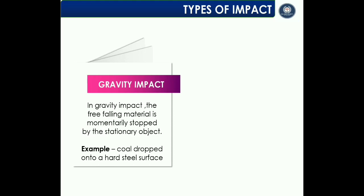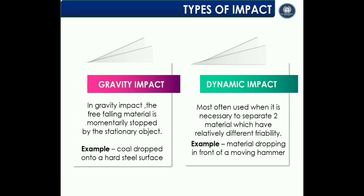There are two different types of impact. The first is gravity impact, in which free-falling material is momentarily stopped by a stationary object — for example, coal dropped onto a hard steel surface. The second is dynamic impact, most often used when it is necessary to separate two materials with relatively different friability — for example, materials dropping in front of a moving hammer.